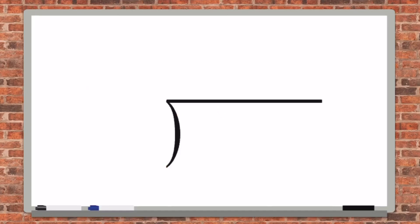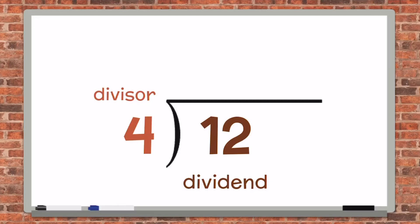You may also see a division problem written like this: 12, the dividend, divided by 4, the divisor, equals 3 — the quotient.